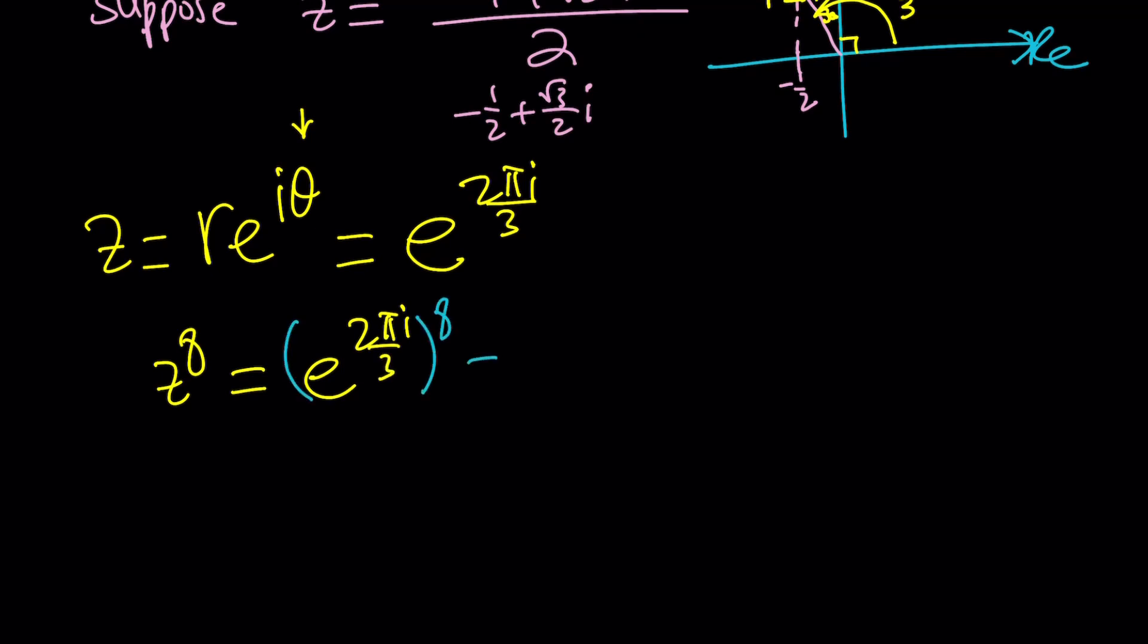When you raise this to the eighth power, it's so easy using Euler's formula, that's going to be 16 pi i over 3. But 16 pi over 3 contains multiples of 2 pi. So we can discard them. And actually, we can take out a 12 pi over 3, which leaves us with e to the power 4 pi i over 3. These are different angles. But when you do e to the power that, you'll always get the same thing. It basically corresponds to the same complex number. But infinitely many forms in polar form.